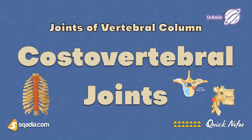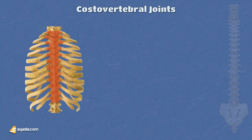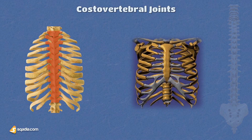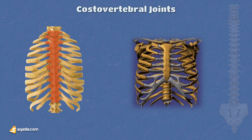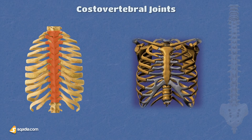Now I will teach you about the costovertebral joints. It's time to take a breath of fresh air, literally. These are synovial joints found on each side of the thoracic vertebrae, and a couple more in the lumbar region. These joints help the ribs dance up and down during inhalation and exhalation — it's the rhythm of respiration.